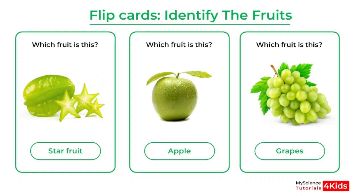You have 10 seconds to guess correctly the name of the fruits on your left, in the middle, and on your right — 10 seconds for each fruit. After 10 seconds, I will show you the name of the fruits. So let's have a look at an example.